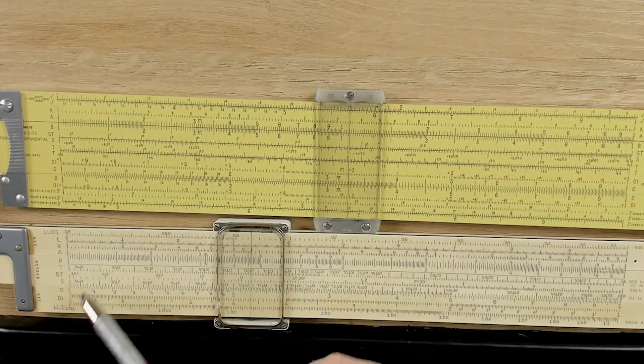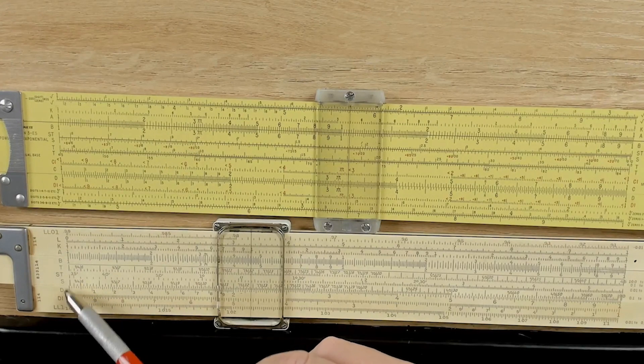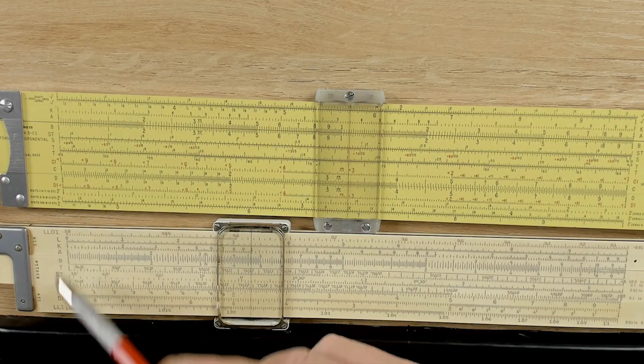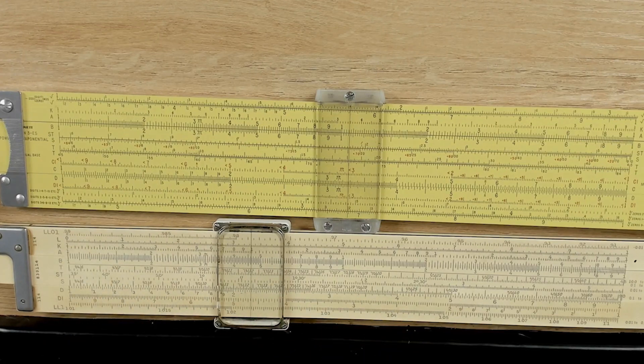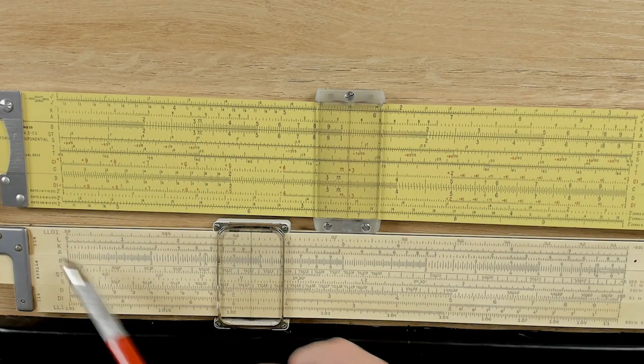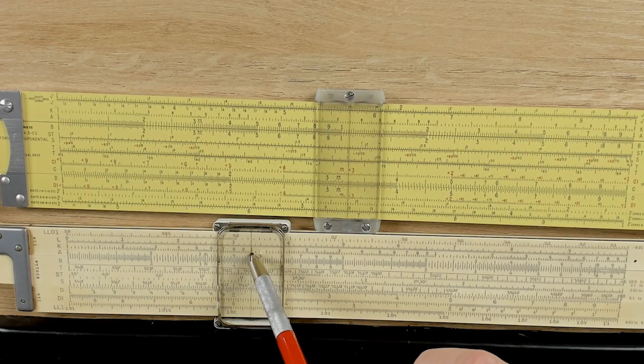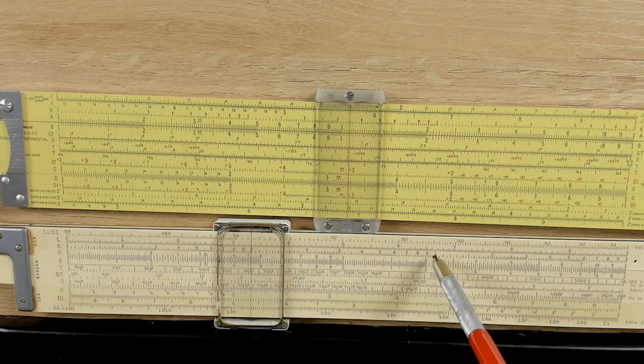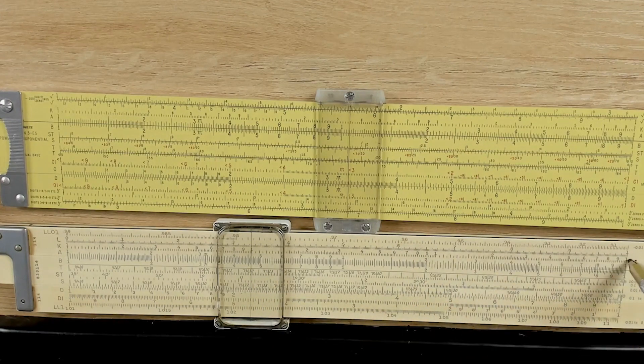Now, you recall the way that the K scale and the C and the D scale were related was cubes and cube roots. So, the K scale is divided into three sections. It goes from 1 to 10, 10 to 100, and then 100 to 1,000. Then it starts off at 1,000 to 10,000 to 100,000 to 1,000,000.